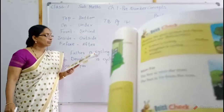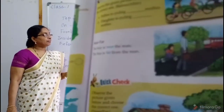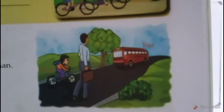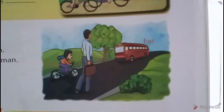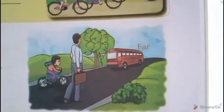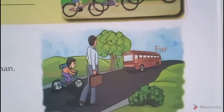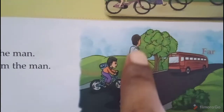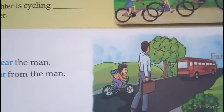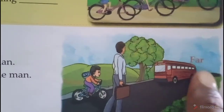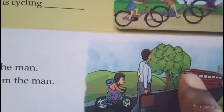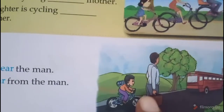See the textbook. Here one picture is showing a bus, a man and a boy — three are there. The man is in the middle. The sentence is: the boy is near the man, close to the man. But the bus is far from the man — the bus is a little far from the man.